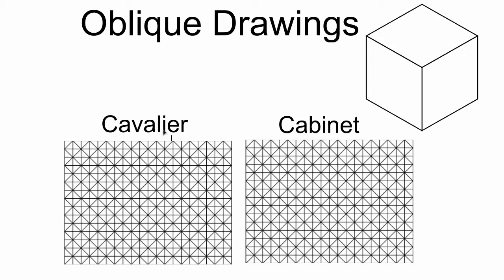In this video, we're going to take a look at oblique drawings. We really have two different types of obliques that we're talking about. We have cavalier and cabinet.